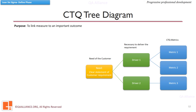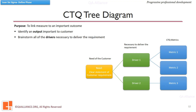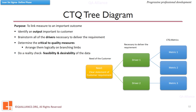A tree diagram can be made in the following way: 1. Identify an output important to the customer. 2. Brainstorm all of the drivers necessary to deliver the requirement. 3. Determine the critical to quality measures and arrange them logically on branching limbs. 4. Do a reality check on the feasibility and desirability of the data. And finally, discuss and confirm which data is to be collected.